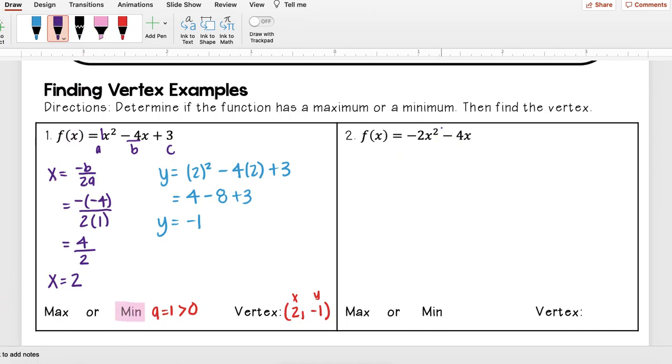Okay, let's try another one. My first step is I want to label my a, b, and c. So here I see that a = -2, b = -4. There's no c value, so that means it's really just a plus 0 at the end.